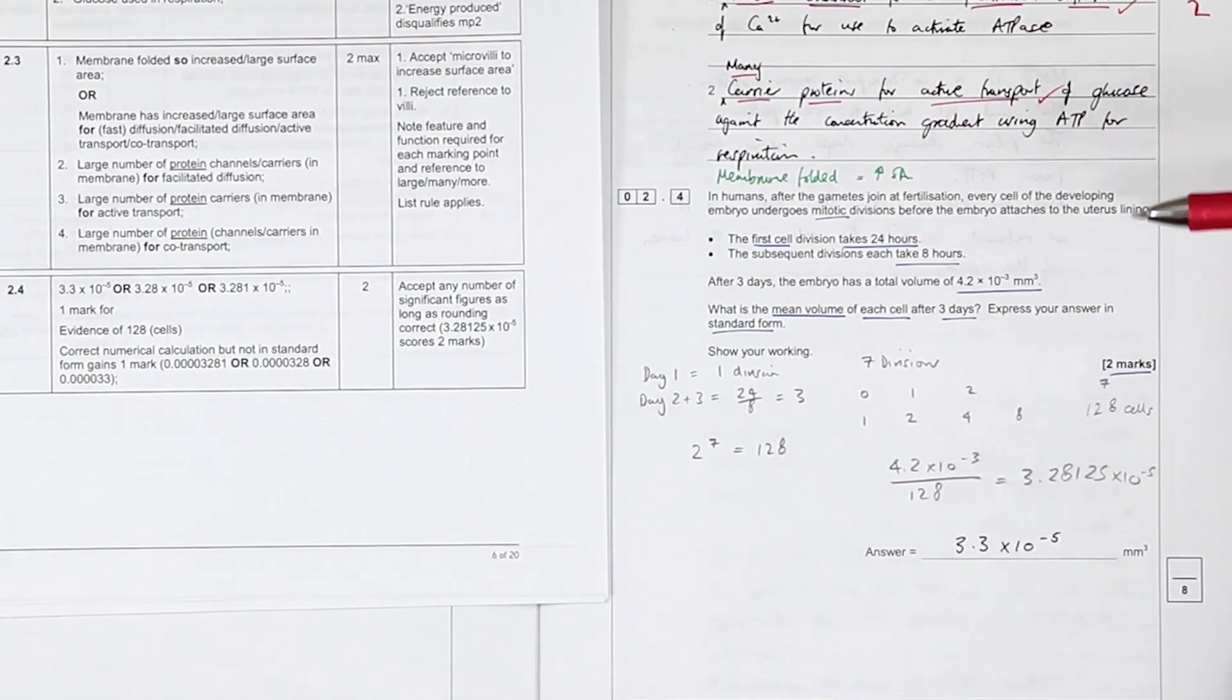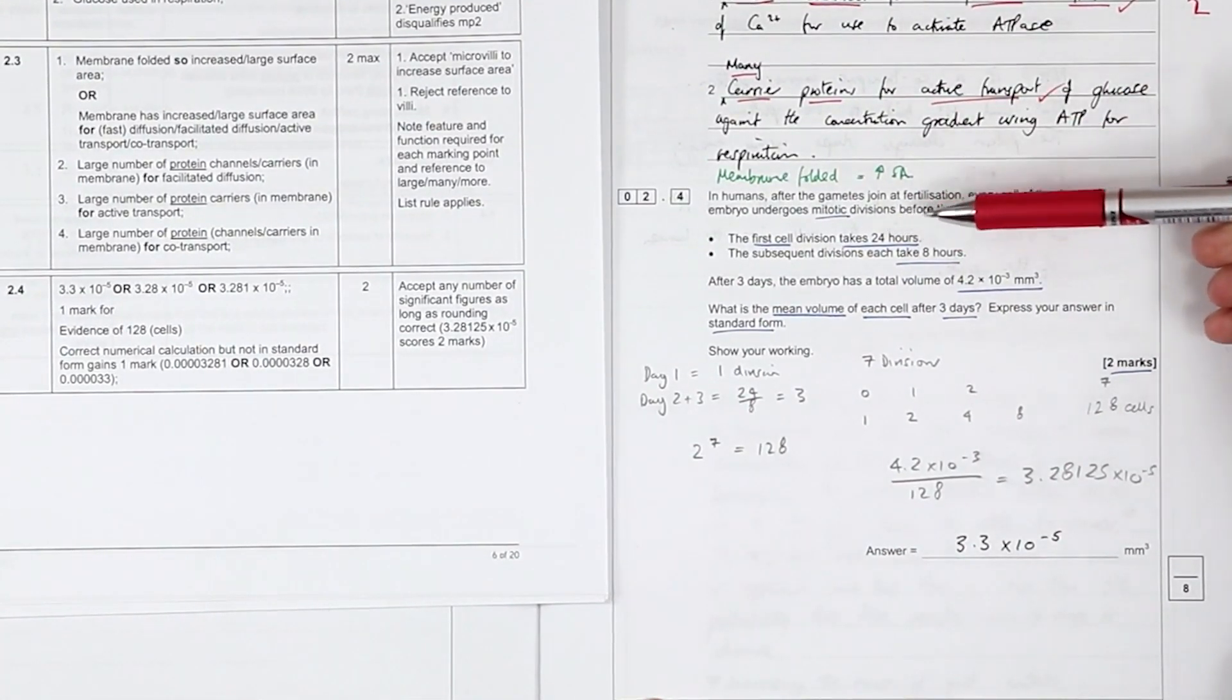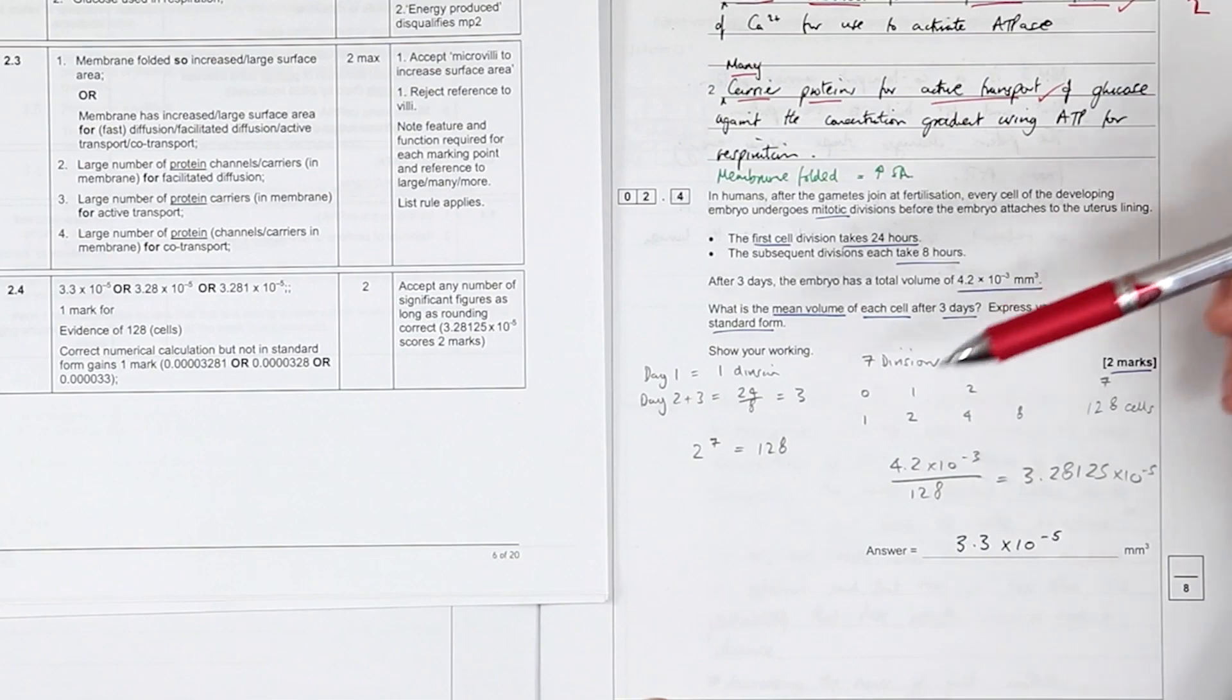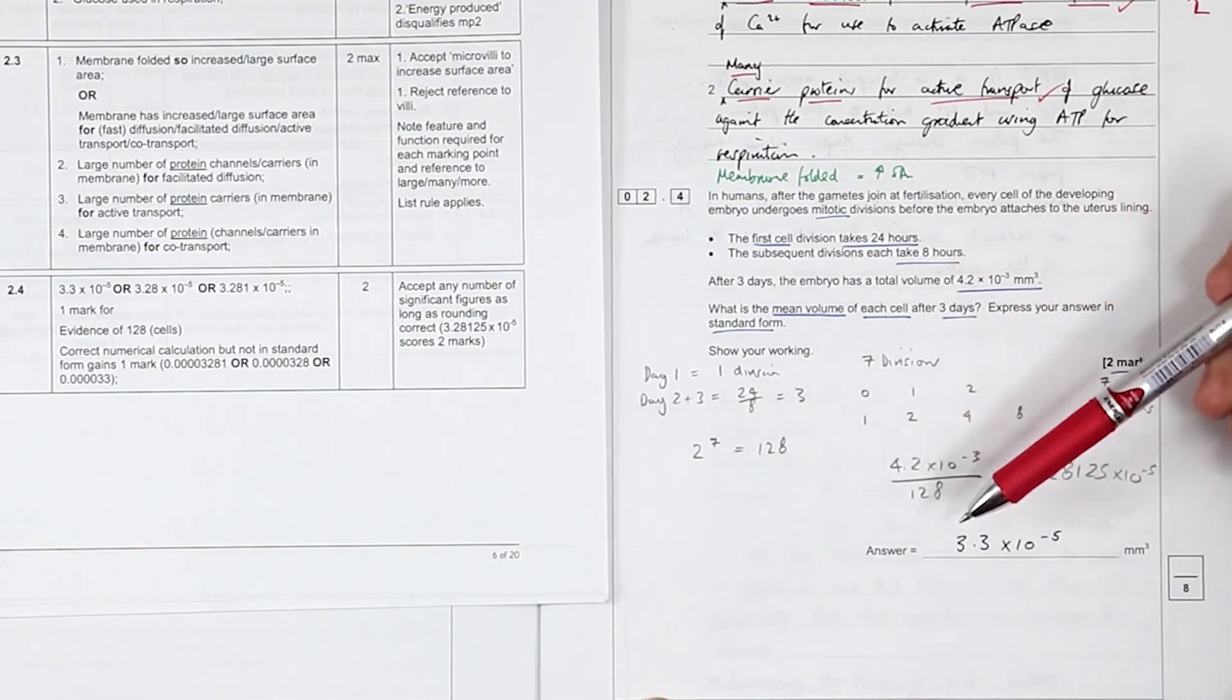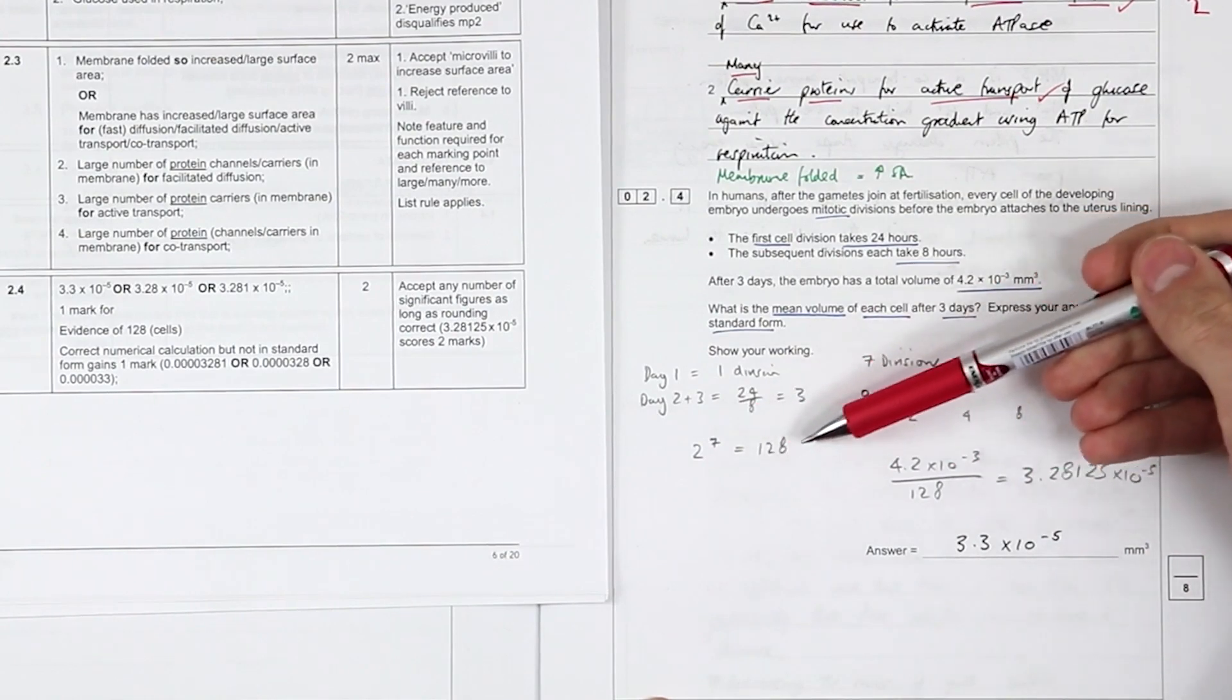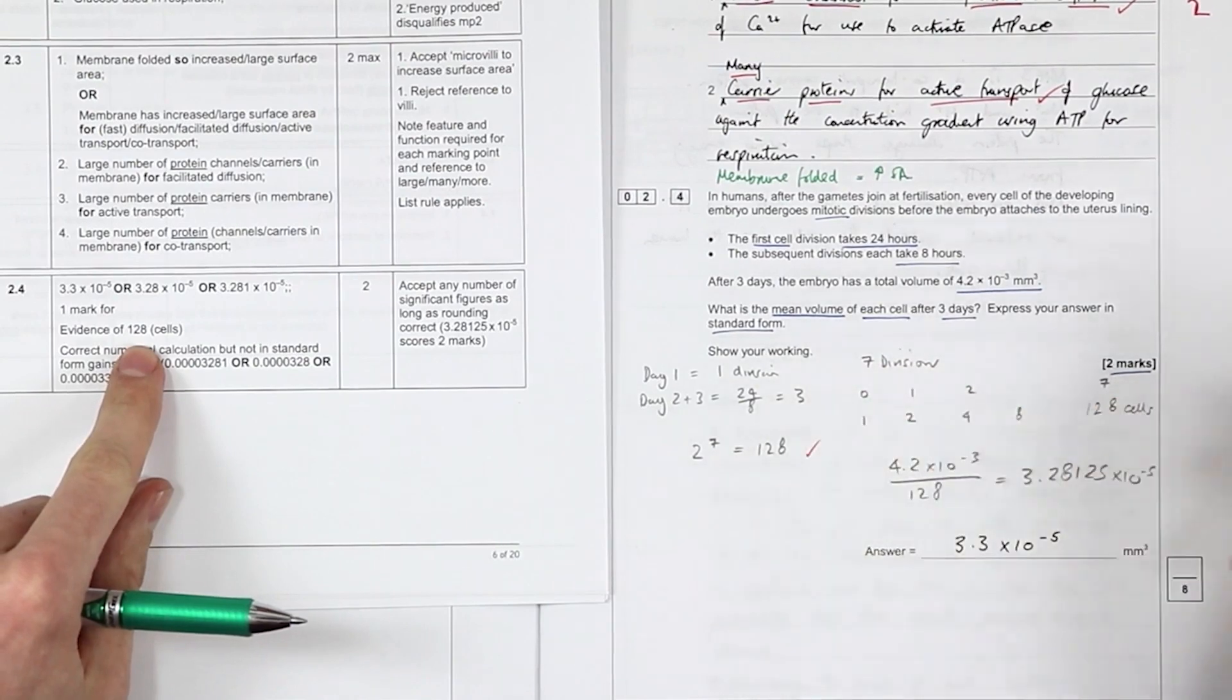So the technique for answering this question was: how many divisions take place? There are seven divisions, I think I helped you out with that in the analysis part of the video. How many cells do you end up with if you start with one and it doubles seven times? One times two times two times two, seven times, which is two to the power seven, gives me 128 cells. Evidence of 128 cells gives me one mark.